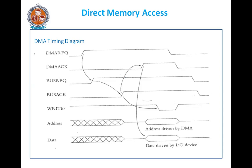If you observe in this diagram, the DMA request is accepted first. Once the DMA request is accepted, the bus request is accepted. Once we get the bus acknowledgement from the microprocessor, the DMA acknowledgement is accepted — meaning we have permission from the microprocessor. The data is put on the data bus and the address is put on the address bus by the DMA. Once the data is put on the data bus, the RAM writes the data, and finally the transfer completes.